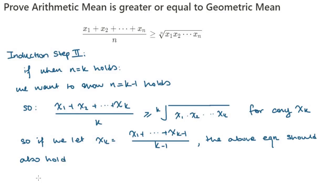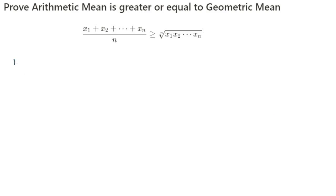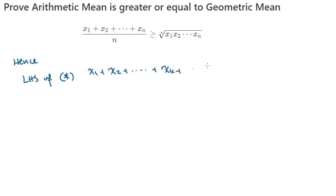So if we let xₖ be this very specific term, the above equation should also hold. Let's substitute xₖ = (x₁ + x₂ + ⋯ + xₖ₋₁)/(k − 1) into the left-hand side of the star, our assumption. You can see the substitution for xₖ in orange.